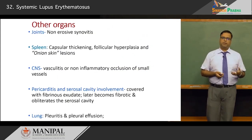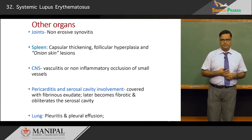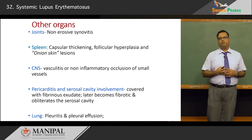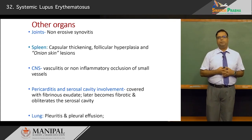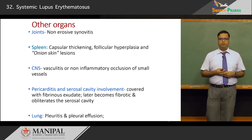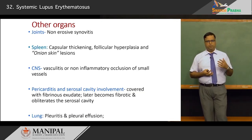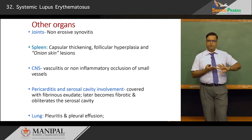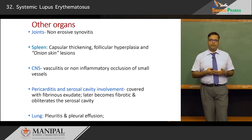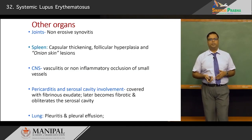In the joints, there is non-damaging, non-erosive synovitis. The spleen is generally enlarged due to antibody production from the white pulp; the white pulp shows concentric areas of lymphoid follicle hyperplasia referred to as onion skin lesions. In the CNS, vasculitis or non-inflammatory vascular occlusion can result in stroke-like conditions. The lung can be affected with pleuritis and pleural effusions, and similarly the pericardium develops fibrinous exudates that organize and become fibrotic.